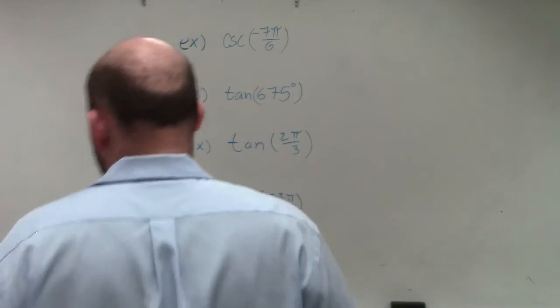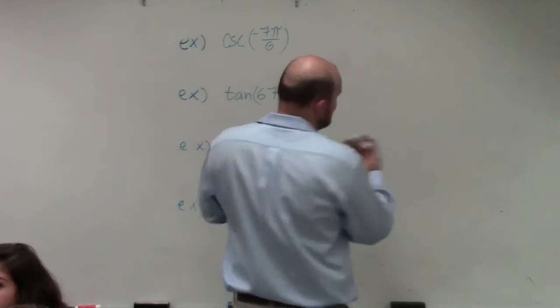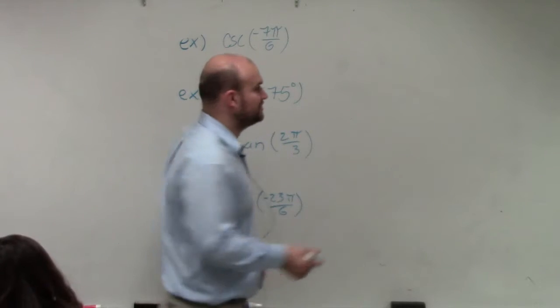First problem is cosecant of negative 7π over 6. A lot of times, if you looked at your unit circle, you can figure this one out.